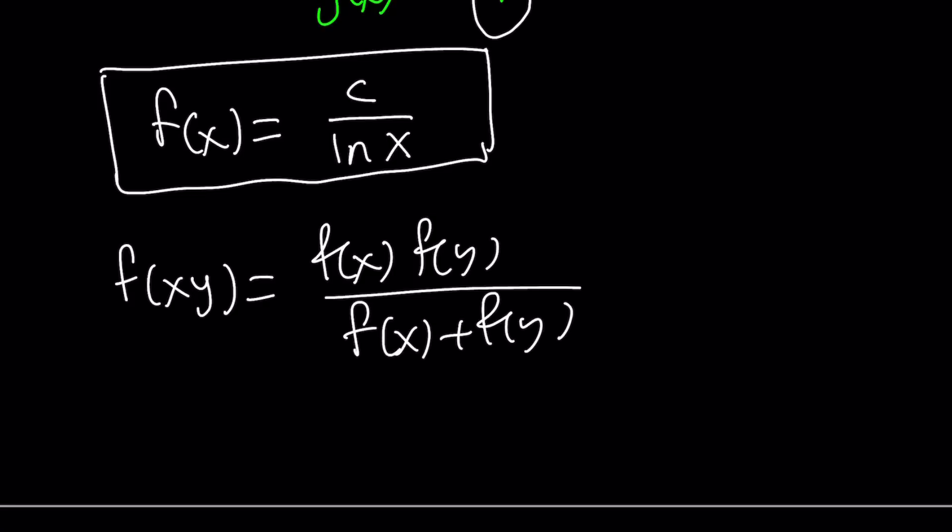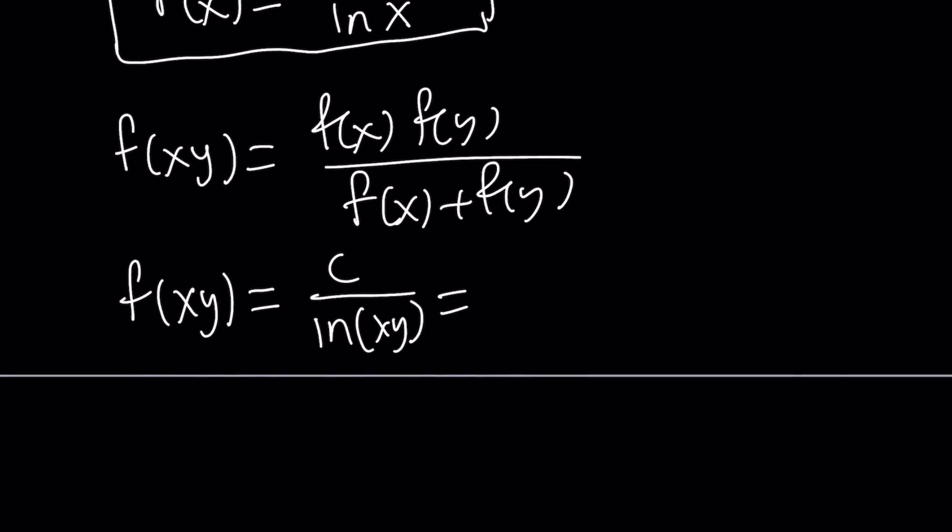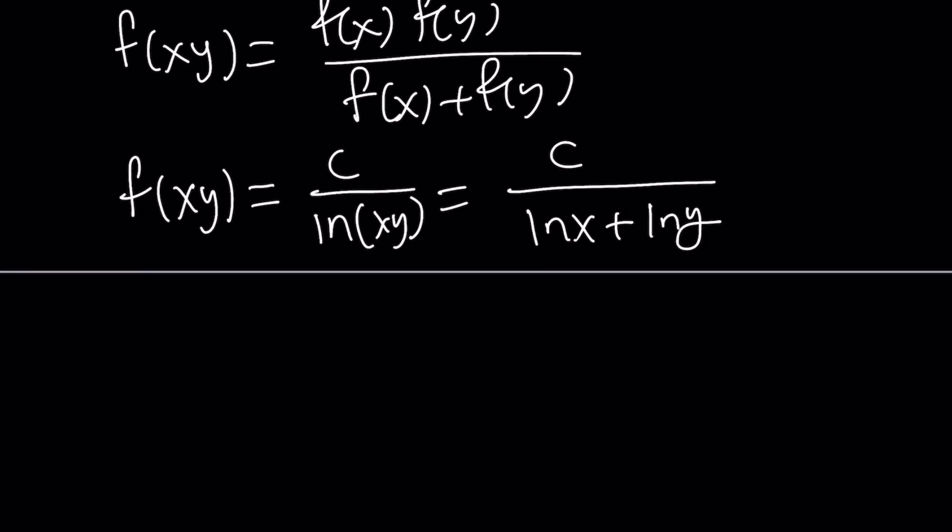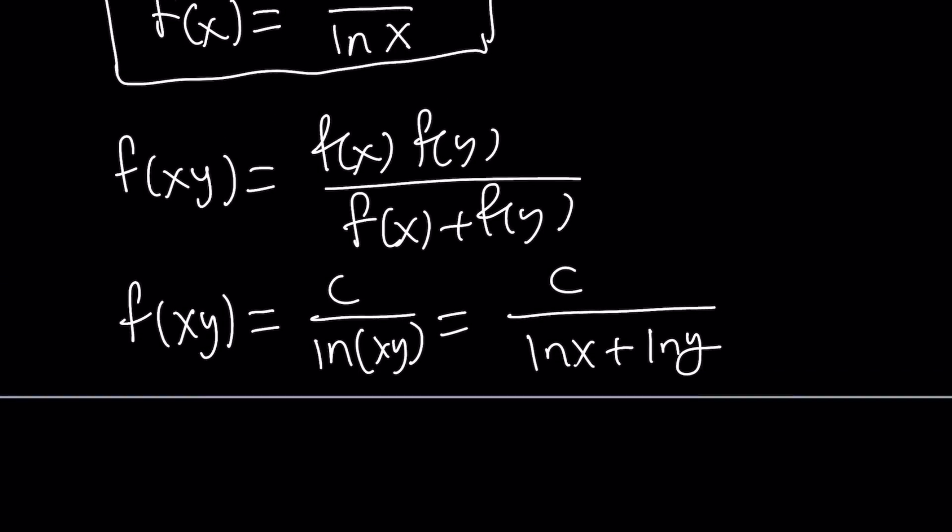Now I'm going to go ahead and evaluate f of xy from here, it's going to be c over ln xy, right? And as you know, this can be written as c over ln x plus ln y. And of course, x and y have to be positive, right?